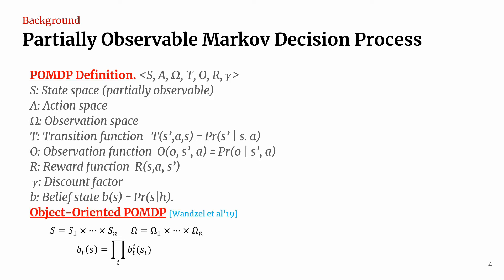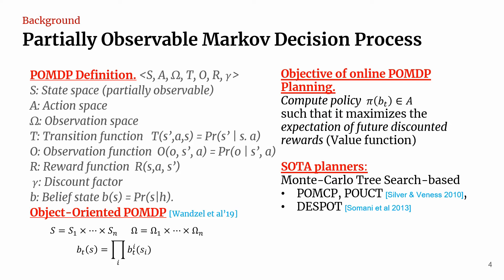Object-oriented POMDP factors the state and observation spaces into independent objects. This allows the belief states to scale linearly instead of exponentially as the number of objects increases. Solving POMDPs offline is impractical for large problems. The objective of online POMDP planning is to compute a policy that outputs an action given the current belief, maximizing the expectation of future discounted rewards. State-of-the-art POMDP planners approximate the full search tree with a partial search tree built by Monte Carlo Tree Search. Notable algorithms include POUCT and DESPOT. We build upon POUCT due to its theoretical optimality.